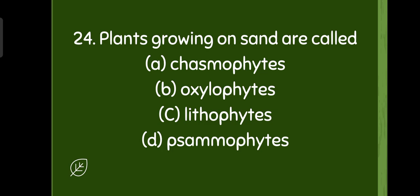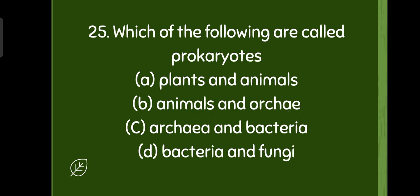Oxalophytes are plants growing on acidic soils and chasmophytes are plants growing in rock crevices. So plants growing on sand are called psammophytes. Which of the following are called prokaryotes? Archaea and bacteria. Option C, the prokaryotes.